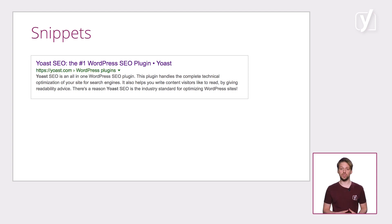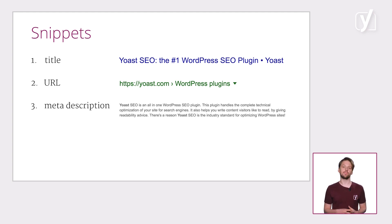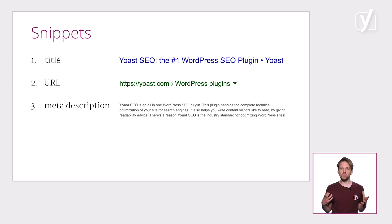We call every separate search result a snippet, and a standard snippet consists of three elements: the title in blue, a URL or slug in green, and a meta description in black. In the meta description, you should give a clear description of what your page is about. Your meta description should entice users to click the results, so it's hugely important. With our plugin, you can determine the title and slug, and give Google a suggestion for the meta description.